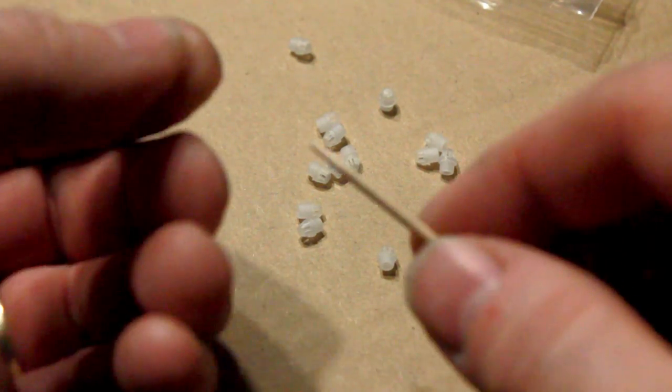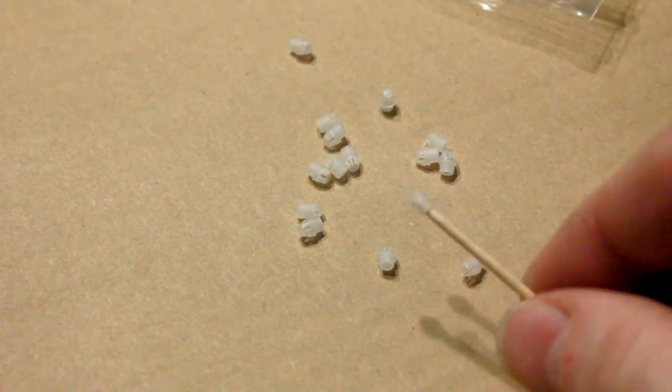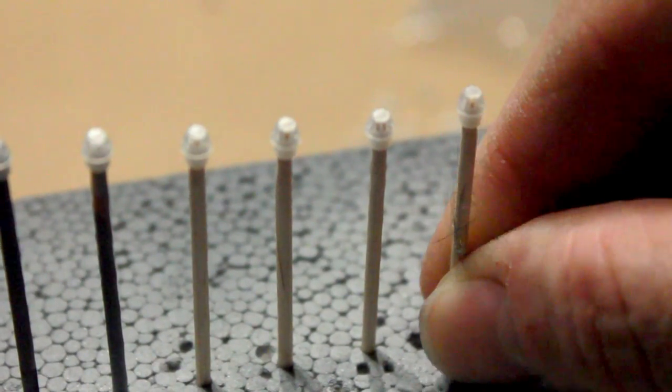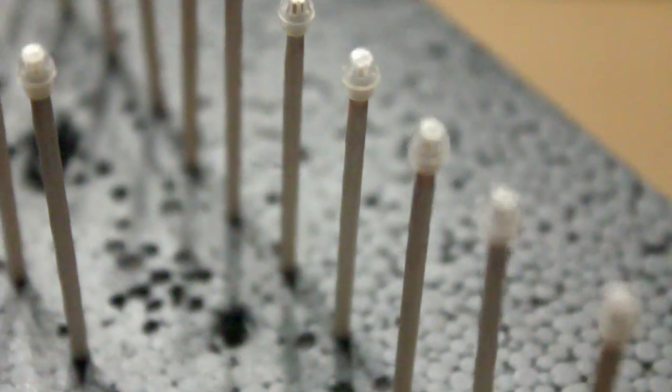So to start with I'm going to take all these little suckers and put them on the end of some toothpicks and line them up on my piece of foam so that I can paint them all at once.